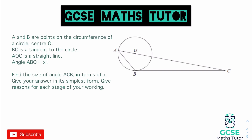On to question four — something different again. A and B are points on the circumference of the circle, centre O. BC is a tangent to the circle. AOC is a straight line passing through the diameter and continuing to C. Angle ABO equals X — drawing in line OB creates this little angle here. Find the size of angle ACB in terms of X, giving your answer in simplest form with reasons for each stage.